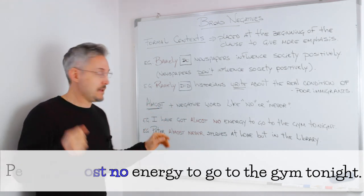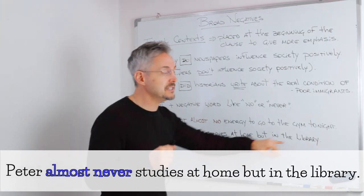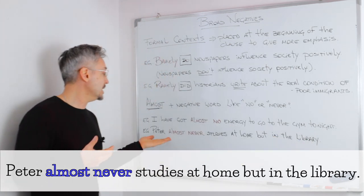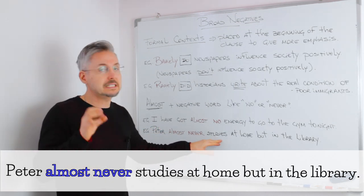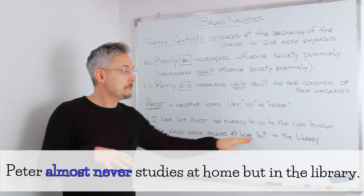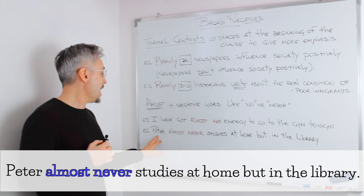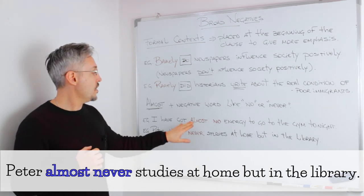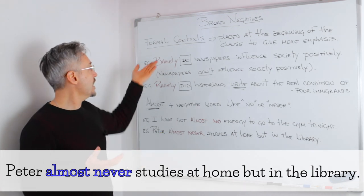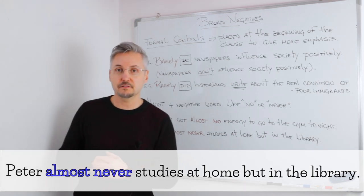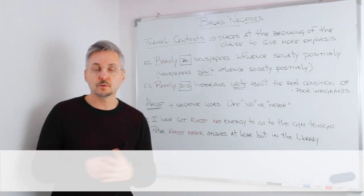Another example: Peter almost never studies at home, but in the library. So that means that Peter — sometimes, a few times — studies at home, but he studies in the library instead. So 'almost never' and 'almost no' — you can replace these with a broad negative like 'scarcely' or 'barely', if you don't want to use them.